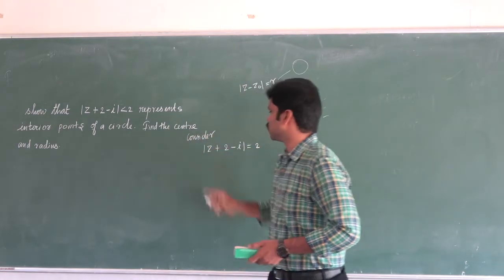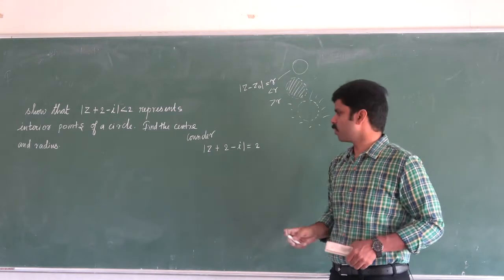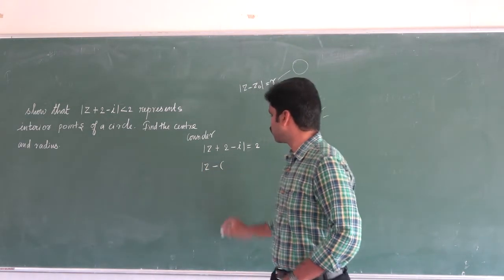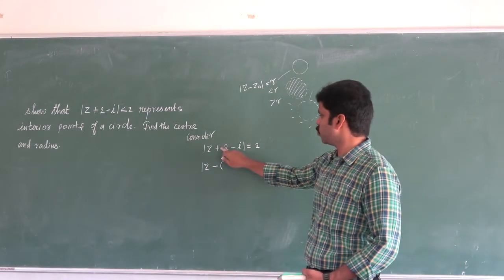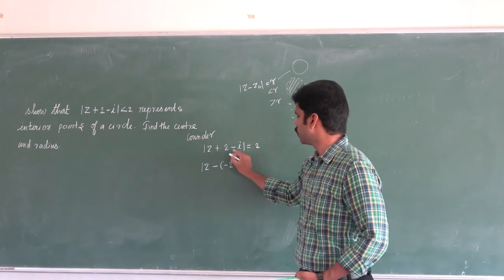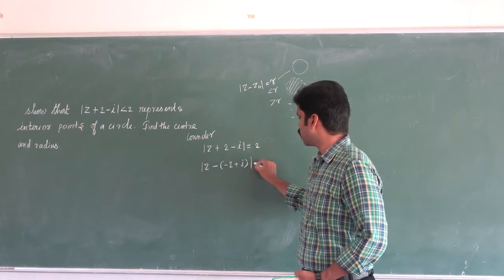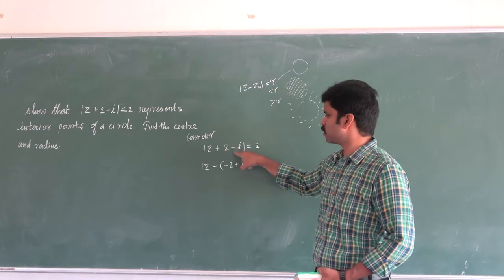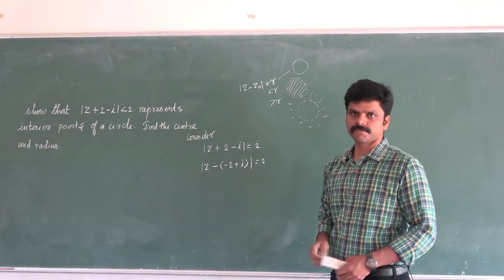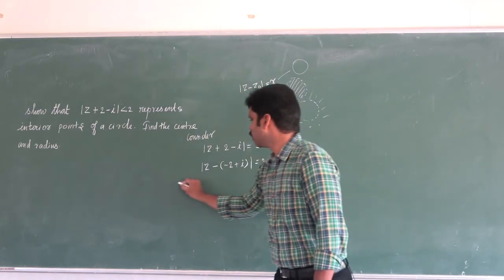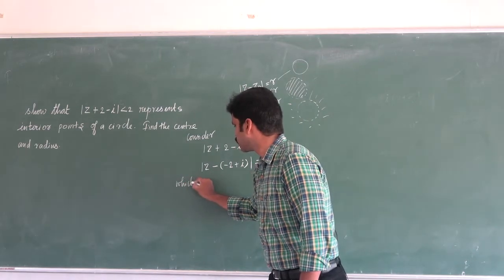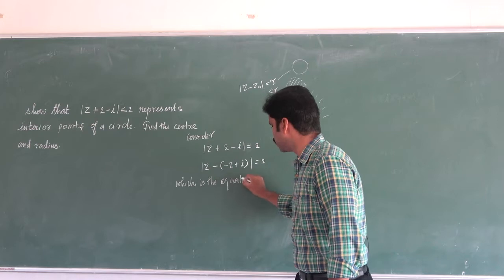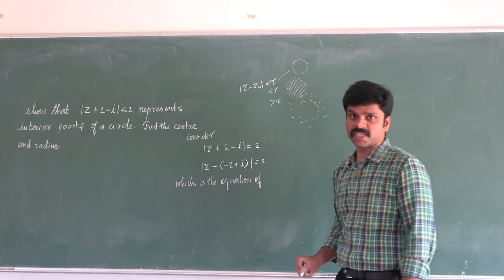So, if you multiply this minus inside, you will get this plus and minus i, which is the equation of, what is the equation?